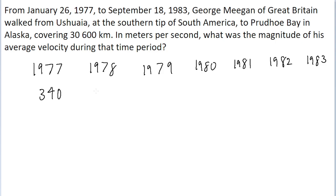Then we have all of 1978, so that's 365 days. All of 1979, 365.